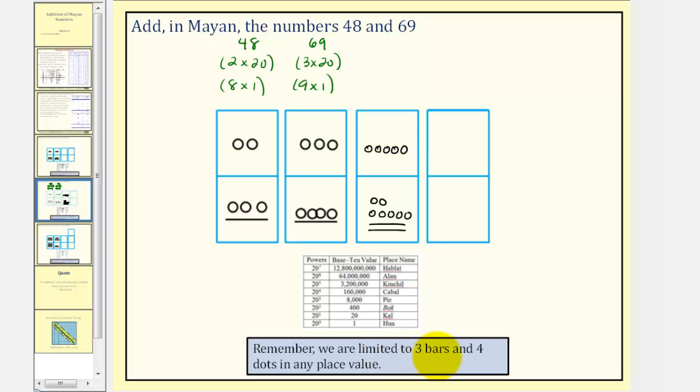But remember we're only allowed to have up to three bars and four dots in any place value. So looking at the ones place value, we'll exchange these five dots for one bar. So in the sum, we'll have three bars and two dots in the ones place value. Here we also have five dots which we'll exchange for one bar. So we have a bar in the 20s place value. So our sum here, we have five 20s and here we have 17 ones. So this would be 100 plus 17 or 117 for our sum which is the sum of 48 and 69.